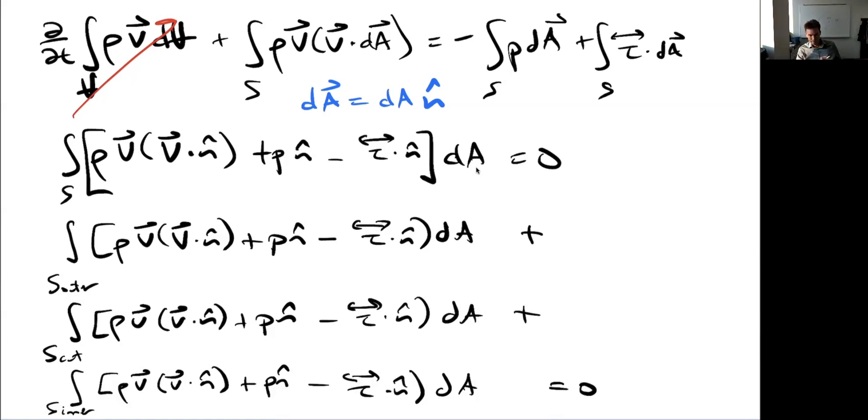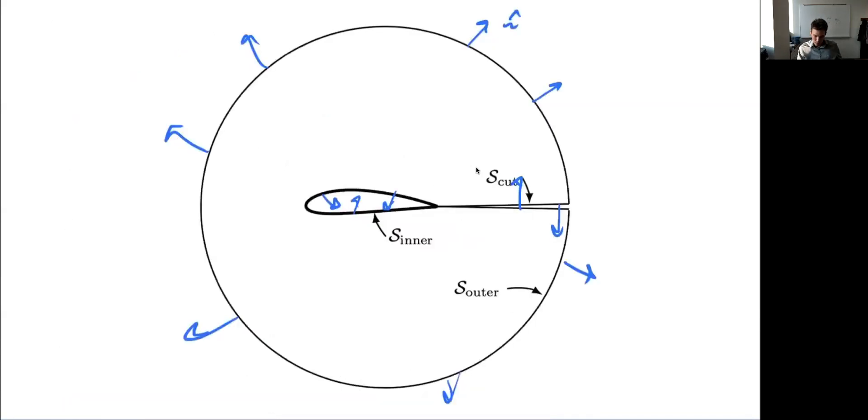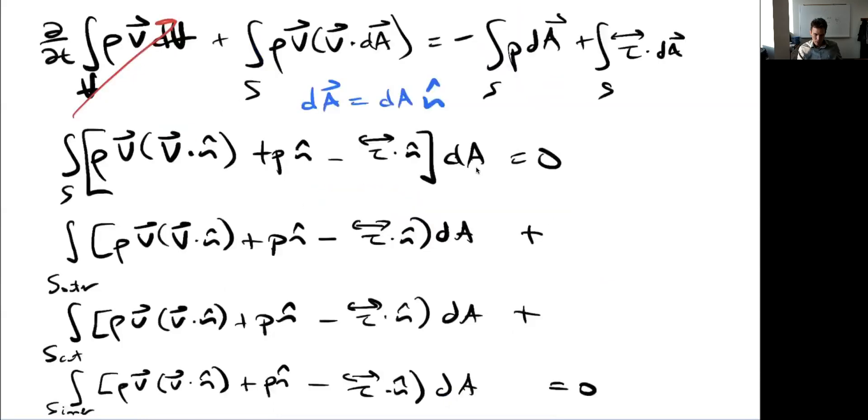Well, one thing we can do is that we know at the body, right over this inner control surface around the body, that no velocity can go through the body. This is the no flow through condition. So the V dot n̂ on the inner surface is zero. So this term here is zero.